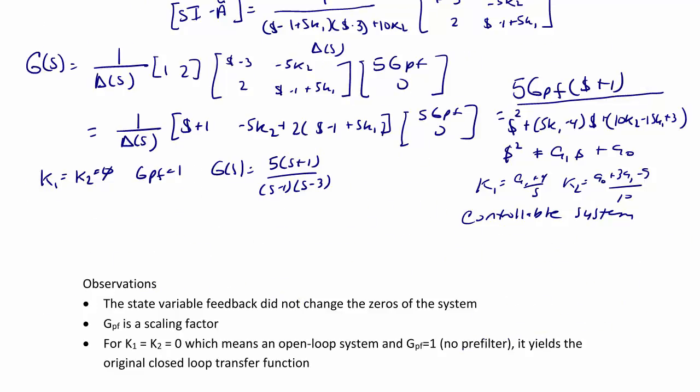So we can make three observations about this activity. The first one is that the state variable feedback did not change the zeros of the system. The second is that GPF is a scaling factor. And the third is that for K1 and K2 equal to 0, which means we have an open loop system with no state variable feedback control and no pre-filter, which means GPF is equal to 1, it yields the original closed loop transfer function.